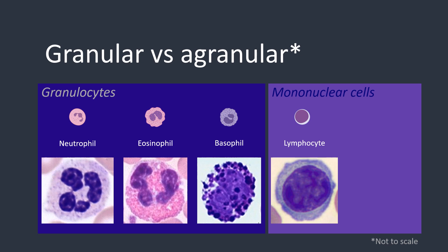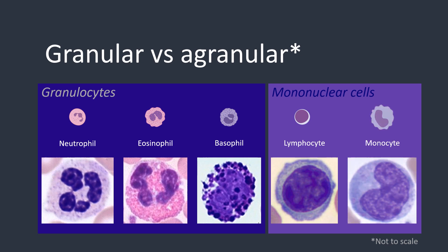Last but by no means least, we have the monocytes. The monocyte is the largest of the normal white cells. The nucleus is irregular and lobulated — it is often described as being kidney bean shaped. The cytoplasm is greyish blue and can contain vacuoles. Monocytes often have an irregular shaped cytoplasm and contain very fine granules.